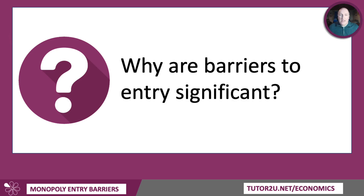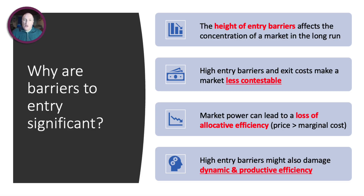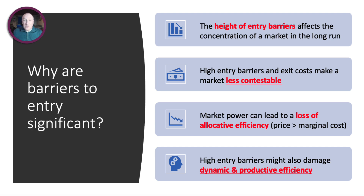Why are barriers to entry significant? Because they affect the concentration of markets in the long run. If you have very high entry barriers and/or exit costs, that makes a market less contestable and therefore more monopolistic. If existing firms have that market power, it allows them to set price well above marginal and average cost. Price above marginal cost means a loss of allocative efficiency. High barriers to entry might also damage dynamic efficiency — less innovation — as well as productive efficiency, particularly if existing firms allow their diseconomies to take over.